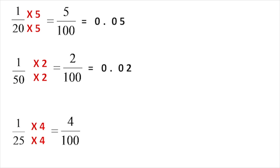For 1/25, we multiply by 4 to get denominator 100. So 1/25 = 4/100. The numerator is 4, giving the decimal 0.04.